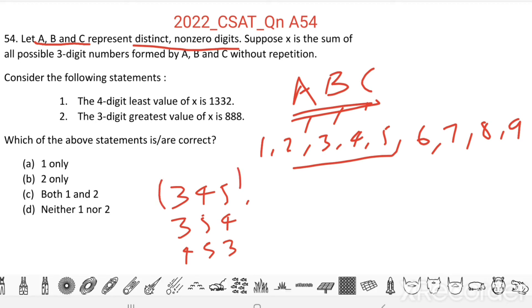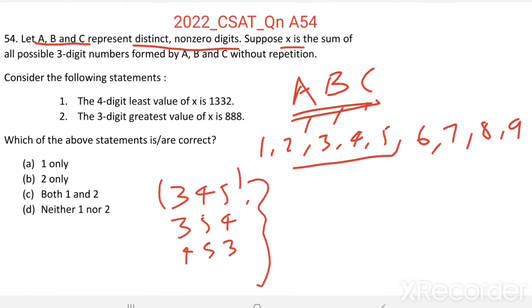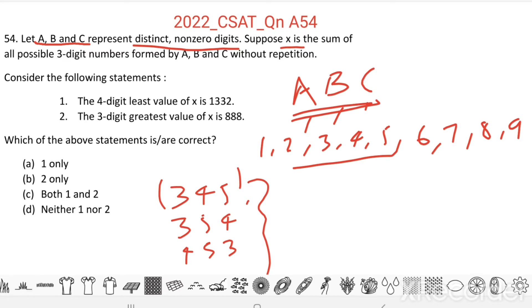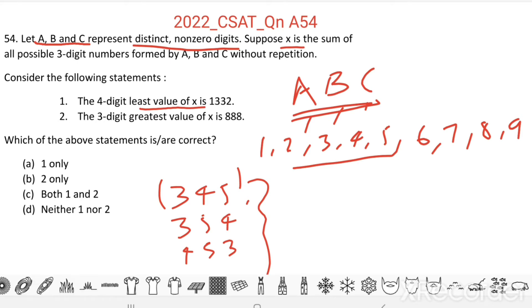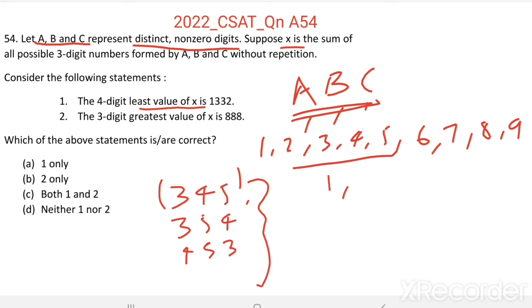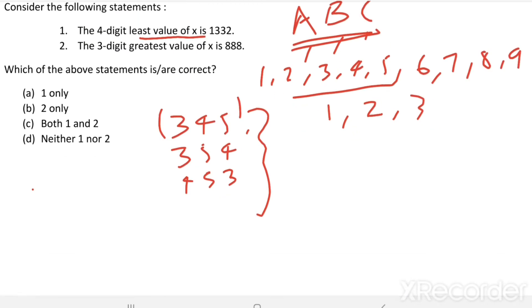So, X is the sum of all these numbers. Then, they are asking the 4-digit least value of X. So, before finding the 4-digit least value, first find the least value of X. We get the least value of X when we choose least digits from this. Least digits are 1, 2, 3.